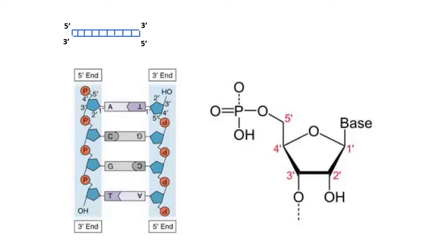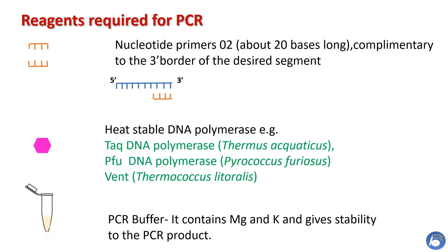The five prime and three prime designations refer to the number of carbon atoms in a deoxyribose sugar molecule to which a phosphate group bonds. The next thing required for PCR is two primers which are also DNA. These are complementary to the three prime border of the DNA to be amplified.